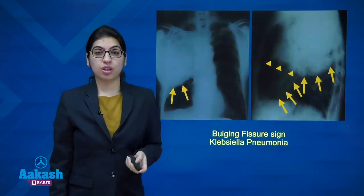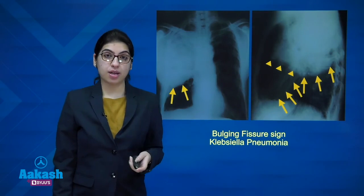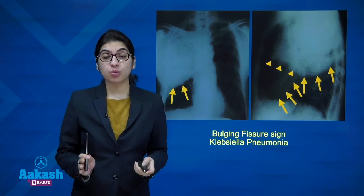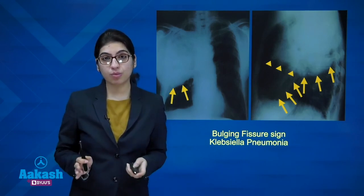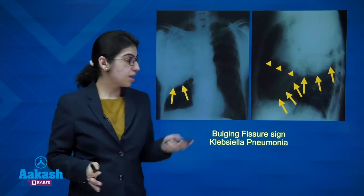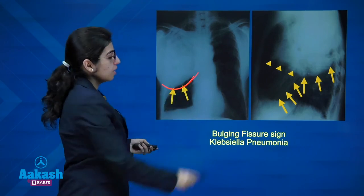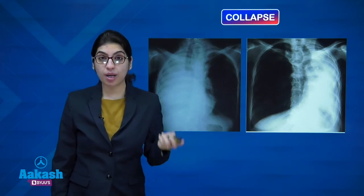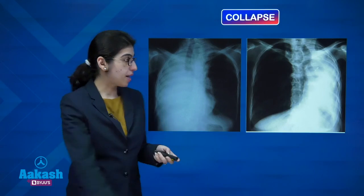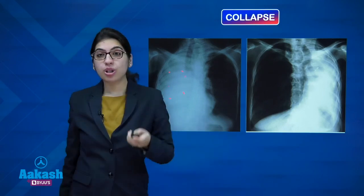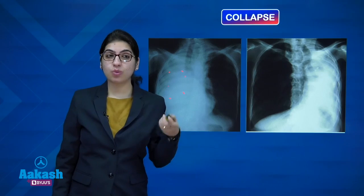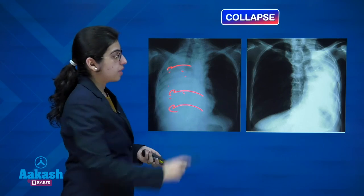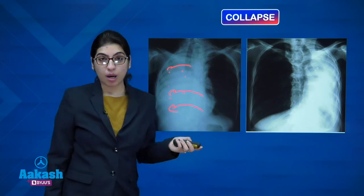Consolidation normally does not have mass effect and does not shift the mediastinum or surrounding fissures. However, Klebsiella pneumonia, an expansile pneumonia with voluminous exudates, produces the bulging fissure sign. Collapse, where air is completely resorbed, presents as an opacity that produces ipsilateral mass effect — pulling the trachea, mediastinum, and heart towards the same side.